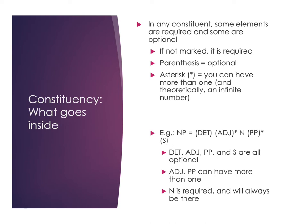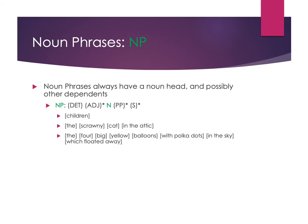Looking at examples of noun phrases: 'children' is a perfectly fine noun phrase — it just has a noun and nothing else. I can say 'I hate children' and that works fine. But I can add things: 'the scrawny cat in the attic' adds a determiner, an adjective, and a prepositional phrase. Or I can have a very elaborate noun phrase like 'the four big yellow balloons with polka dots in the sky which floated away.' Here 'balloons' is the required noun, but I can add a determiner, several adjectives, multiple prepositional phrases, and a dependent clause — all still part of that one noun phrase.